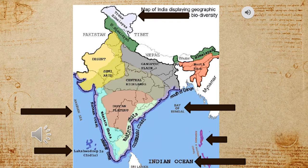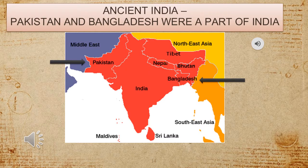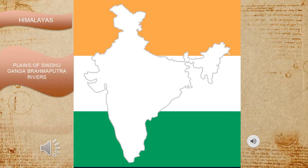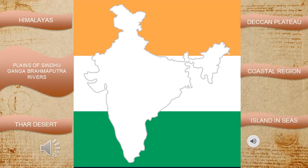Except for the islands of Andaman, Nicobar and Lakshadweep, the rest of the country is contiguous. Before 1947, today's Pakistan and Bangladesh were also a part of India. This can be referred to as Ancient India. The following regions are seen to be important when we look at the course of Indian history.